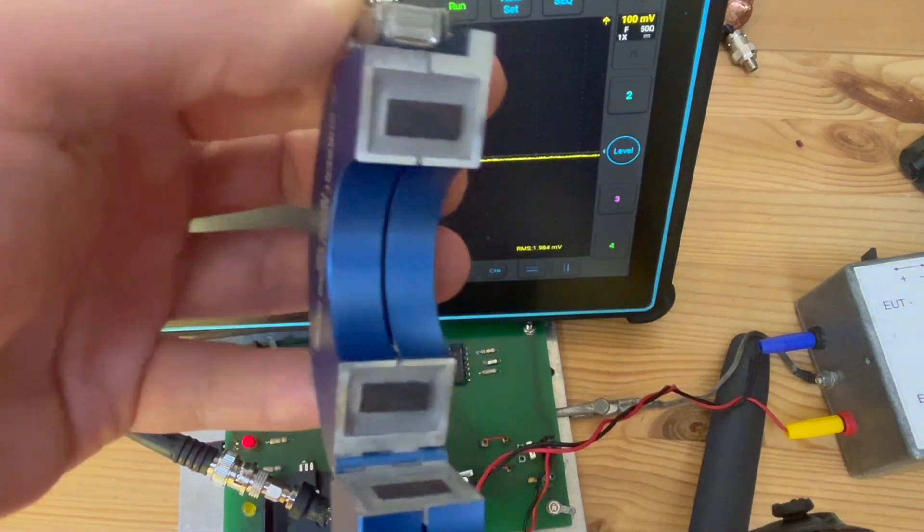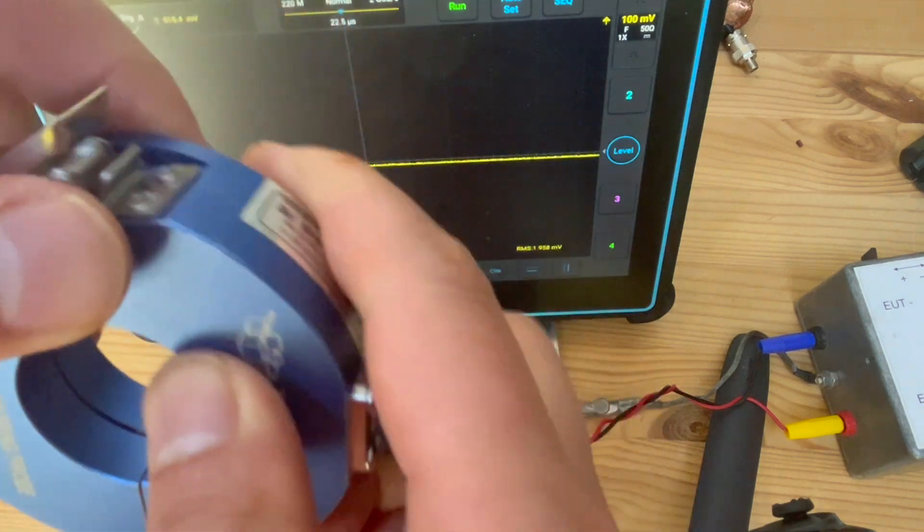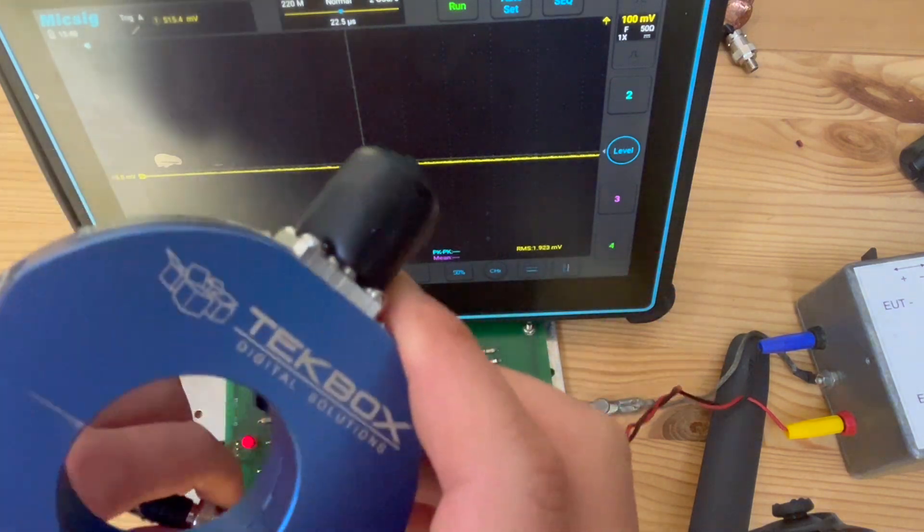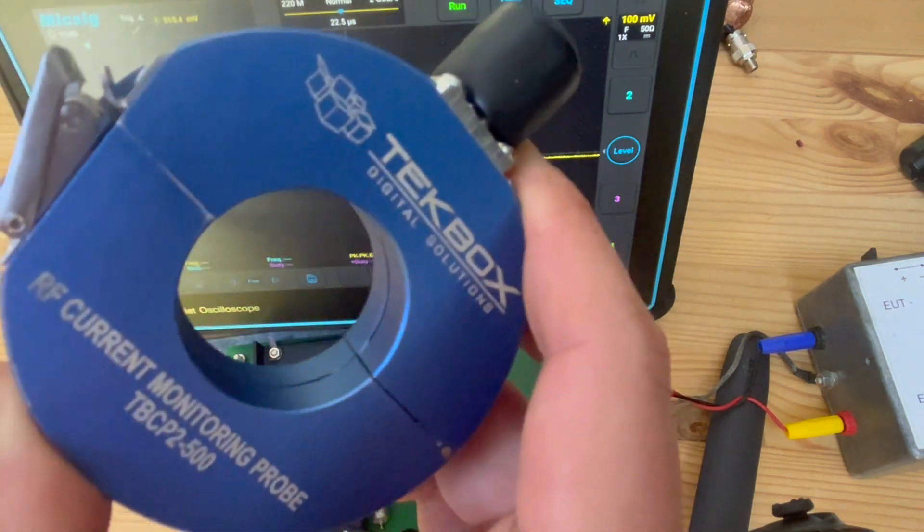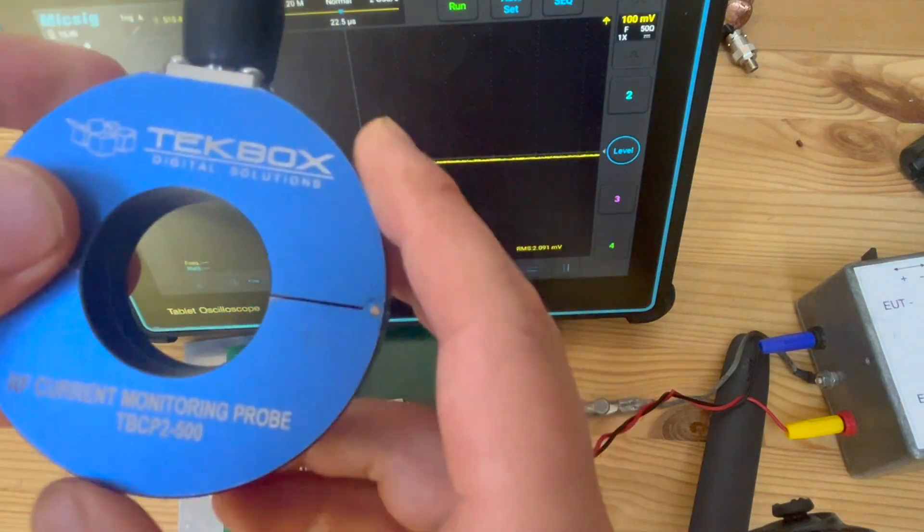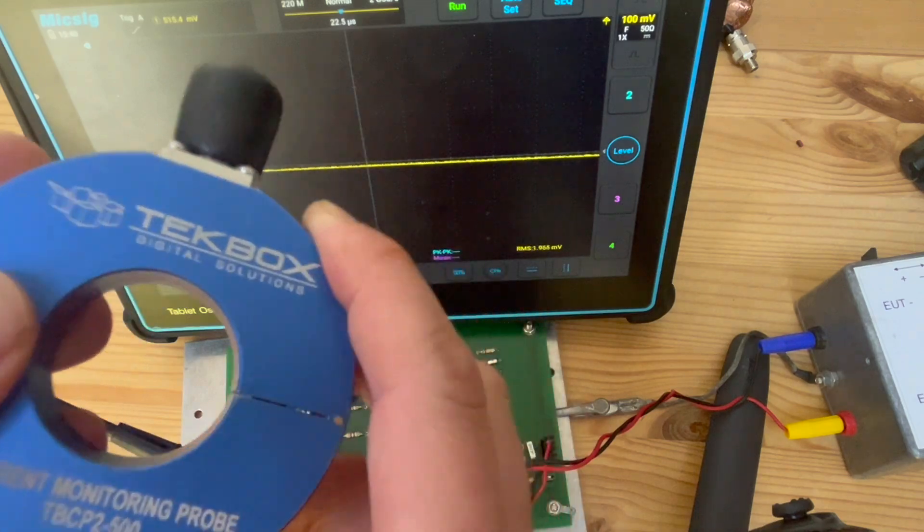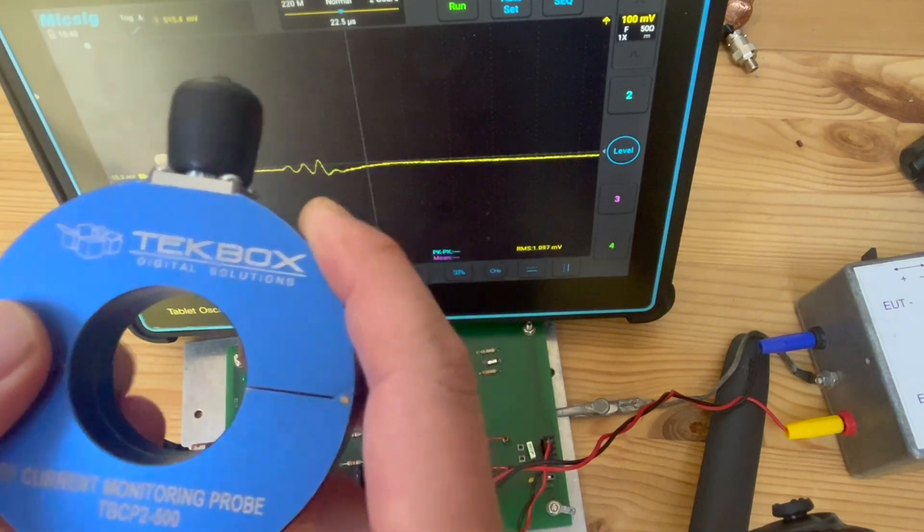When you close it, you have the full loop of a ferrite core, pretty much what we had here, but then you have even more turns of coupling, so even better. That's why this would be very sensitive in terms of picking up the noise.